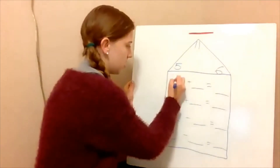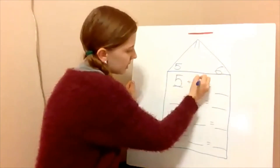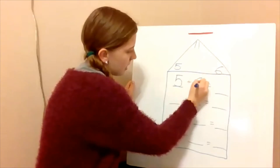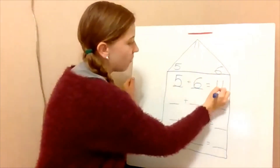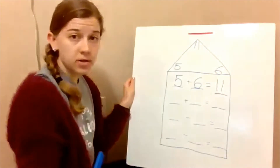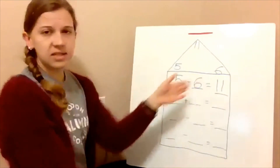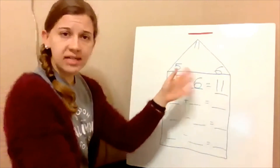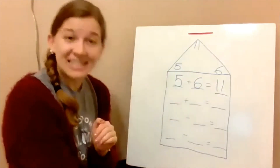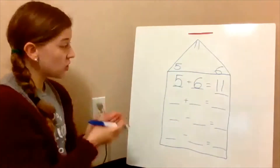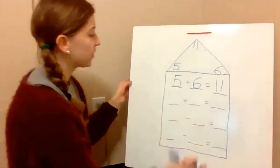Let's do five plus six equals eleven. I have all three numbers: five, six, and eleven. And does this equation make sense? Five plus six equals eleven — yes, that is true. So that's part of the fact family.